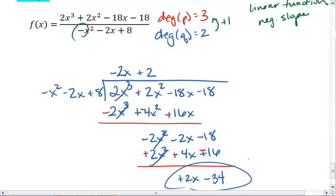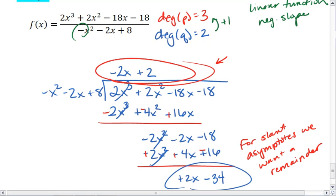For slant asymptotes, we want a remainder. It tells us that there is in fact a slant asymptote in this function. But what we have up top, this is the equation for your slant asymptote. We have a slant asymptote at y equals negative 2x plus 2.